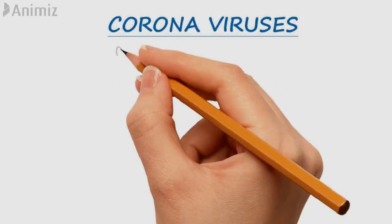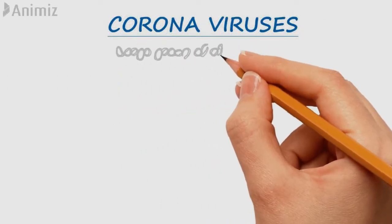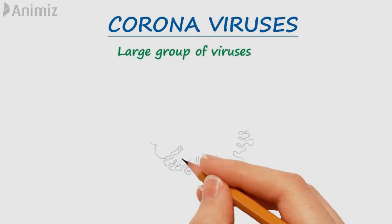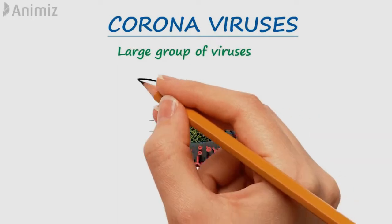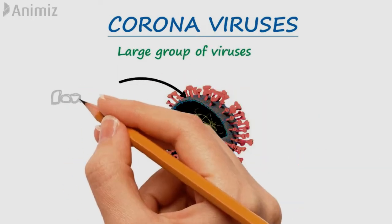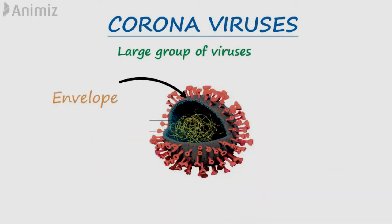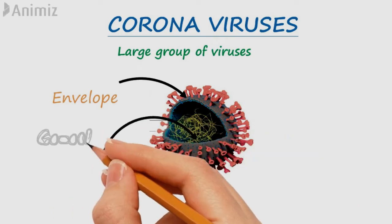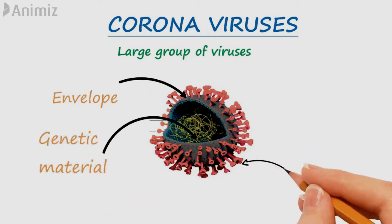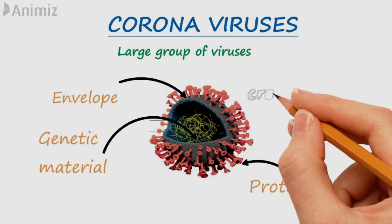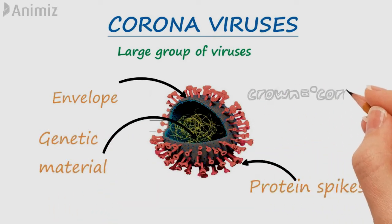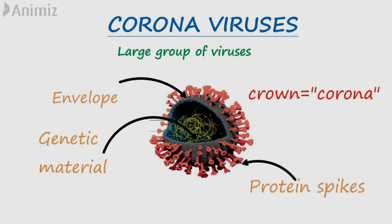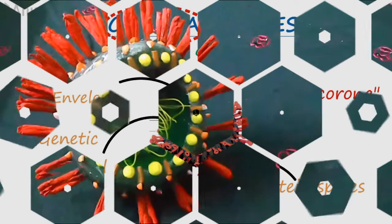Coronaviruses are a large group of viruses. They consist of a genetic material surrounded by an envelope with protein spikes. This gives the appearance of a crown. Crown in Latin is called corona, and that's how the virus gets its name.